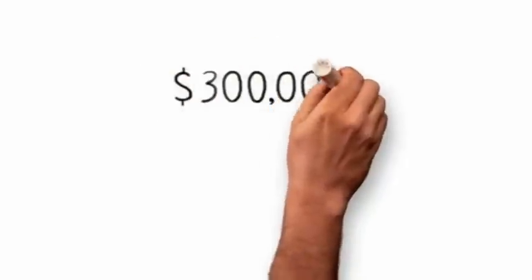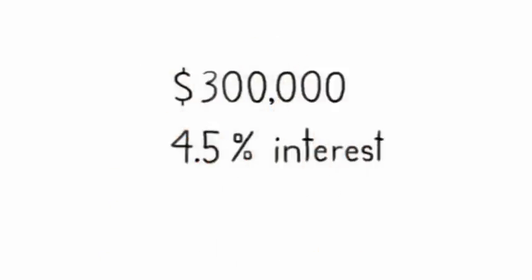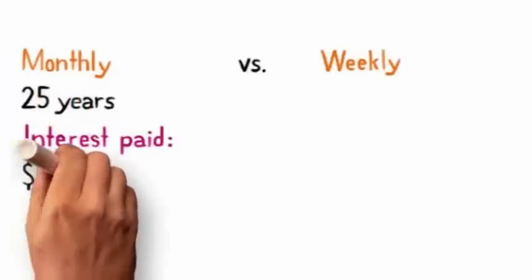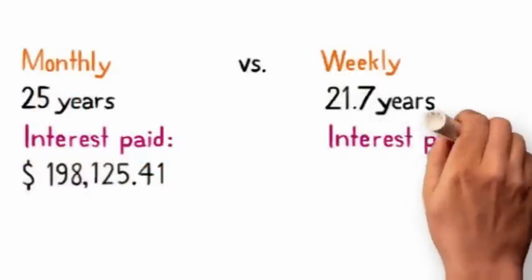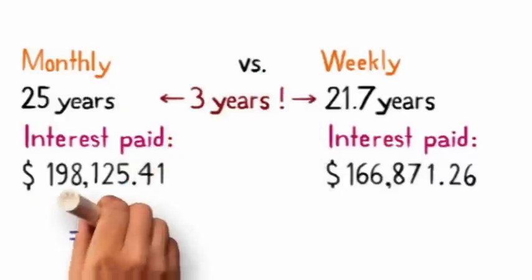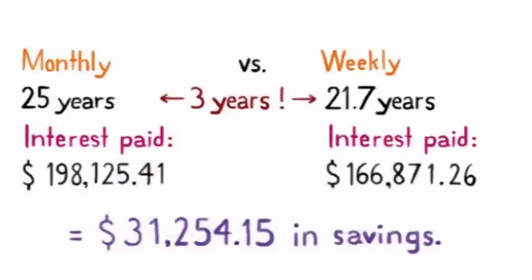Now, let's take the average Canadian mortgage of $300,000 amortized over 25 years. By switching to a weekly or bi-weekly payment, the average Canadian would pay off their mortgage more than three years sooner and save over $31,000 in interest.